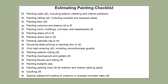The painting checklist for estimating painting quantities for your building includes: painting walls in square feet, including exterior cladding and interior partitions; painting ceiling square footage including covered and exposed areas; painting floors; plain painting of columns and beams; painting trims, moldings, cornices, and baseboards; painting stairs; painting doors and cabinets; structural steel priming or painting; vinyl wall coverings including corner or bumper guards; painting exterior siding; painting downspouts and gutters; painting fences and railing; painting bollards; painting parking lines for exterior and interior parking slots; and special waterproofing coating to masonry or precast concrete walls.